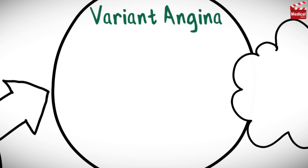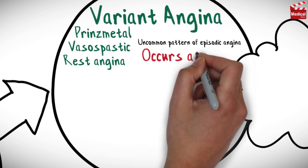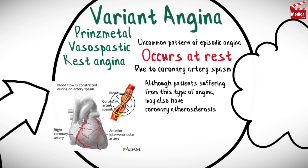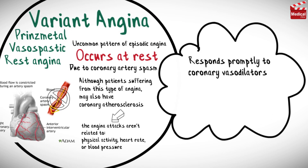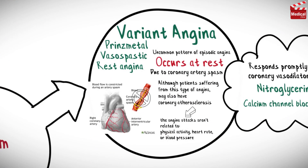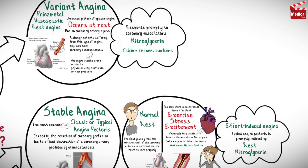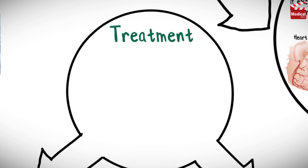The third type is variant angina, also known as Prinzmetal, vasospastic, or rest angina. It is an uncommon pattern of episodic angina occurring at rest, caused by coronary artery spasm rather than plaque. Although patients may also have coronary atherosclerosis, the attacks aren't related to physical activity, heart rate, or blood pressure. Variant angina generally responds promptly to coronary vasodilators such as nitroglycerin and calcium channel blockers. To summarize: unstable and variant angina may occur at rest, while stable angina occurs with exertion; stable and variant angina respond to medication, while unstable angina requires hospitalization.